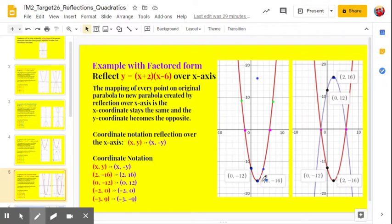Then I have the point here. It looks like 4 negative 12. That's 12 below the x-axis, so I'm going to go 12 above the x-axis.